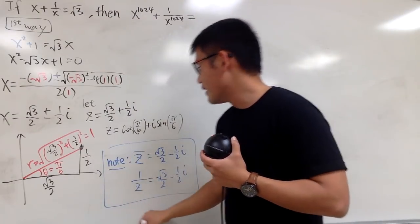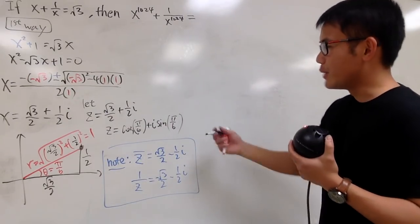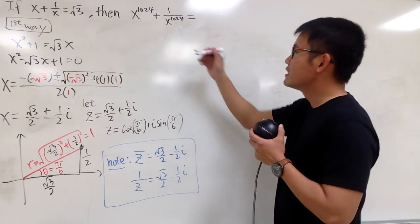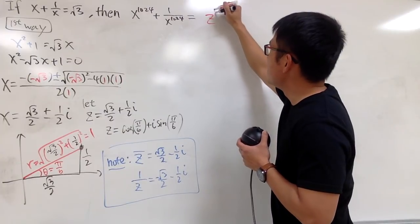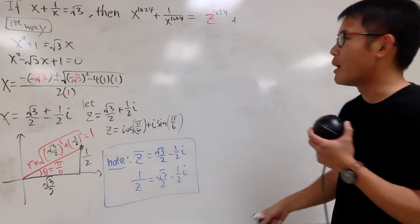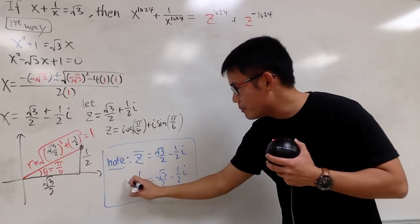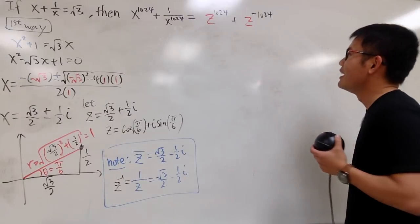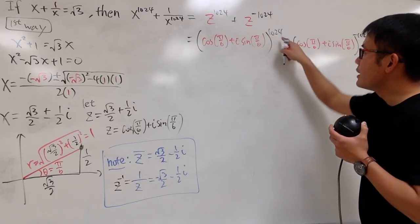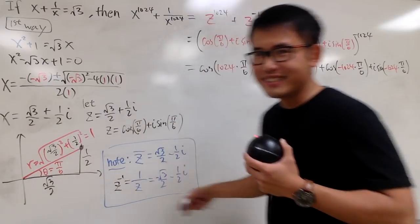So the expression x^1024 + 1/x^1024 is the same as z^1024 plus z^(−1024). By de Moivre's theorem, we multiply the angle by the power, giving us cosine(1024·π/6) plus i·sine(1024·π/6) for z^1024, and cosine(−1024·π/6) plus i·sine(−1024·π/6) for z^(−1024).